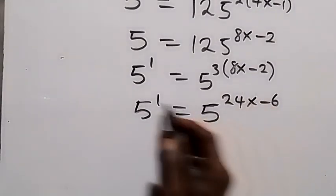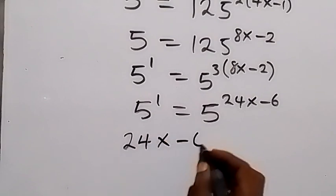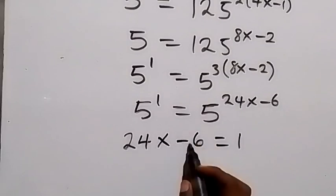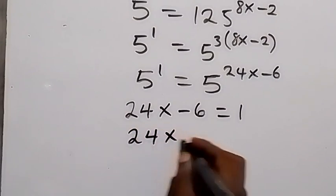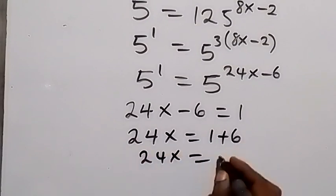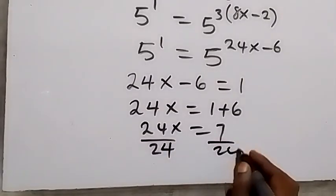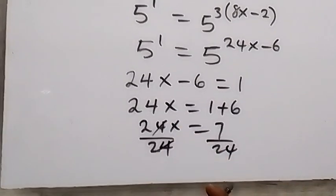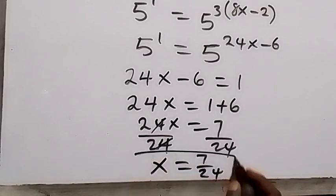Equating the powers: 24x minus 6 equals 1. Taking minus 6 to the other side as plus 6, we have 24x equals 1 plus 6, so 24x equals 7. Dividing both sides by 24, the 24s cancel and we get x equals 7 over 24. We can check this value using the original equation to confirm it satisfies the problem.